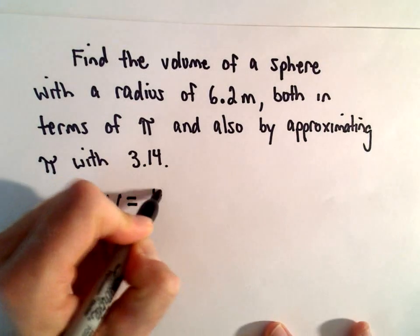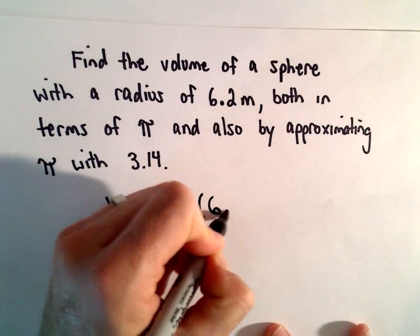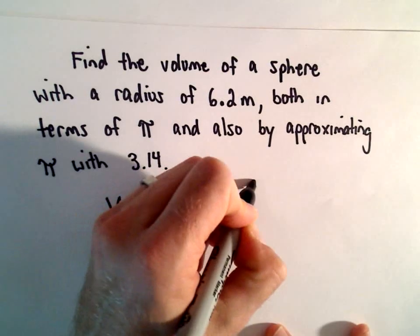So the volume is four-thirds times pi times the cube of the radius. So we'll have to take 6.2 cubed.